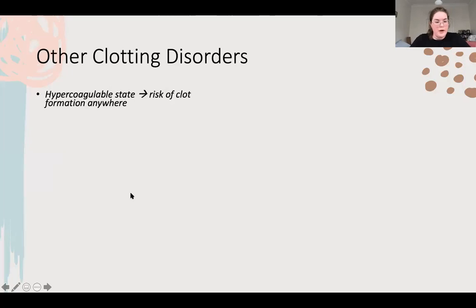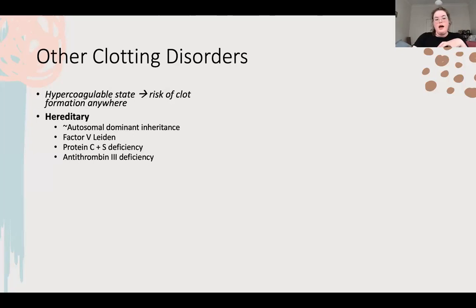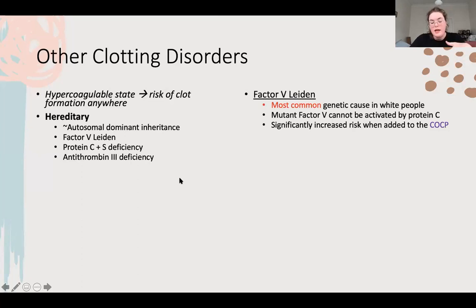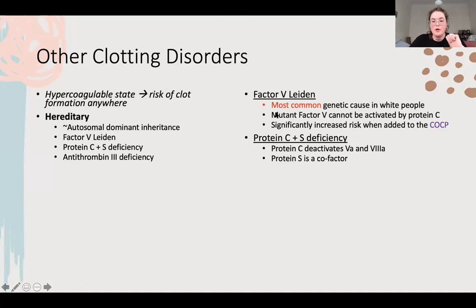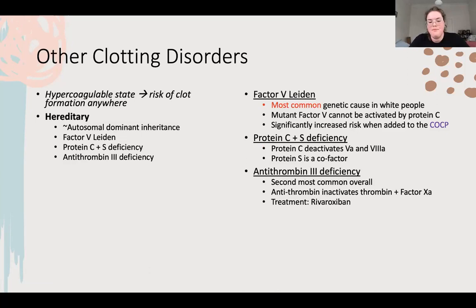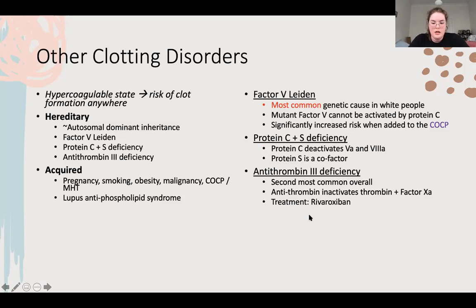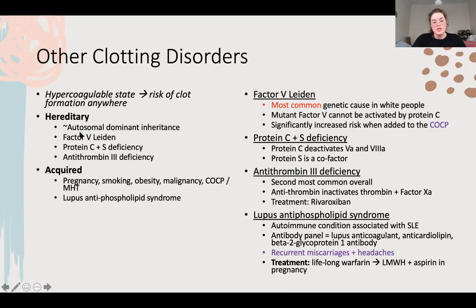Hypercoagulability states are inherited conditions that cause your blood to be thicker, and can be acquired as well. Hereditary ones are usually autosomal dominant. Three to remember: Factor V Leiden is the most common, with exponentially increased risk when added to the pill. Protein C and protein S - C is for clots, S is on the end of clots - when low, you get more clotting. Antithrombin 3 deficiency is another common one, treated with anticoagulation. Acquired causes include Virchow's triad and lupus antiphospholipid syndrome - buzzwords being recurrent miscarriages and headaches, needing long-term anticoagulation.